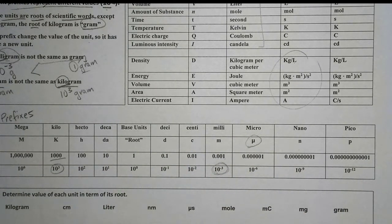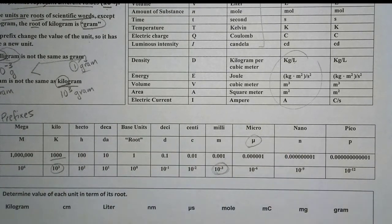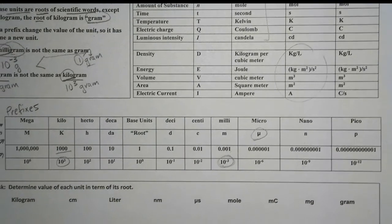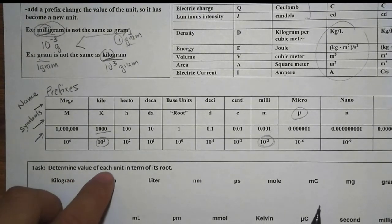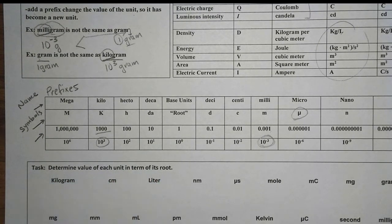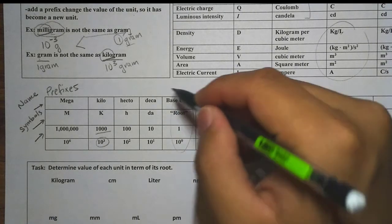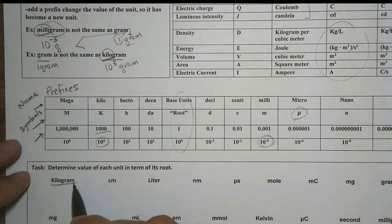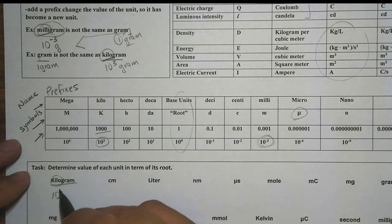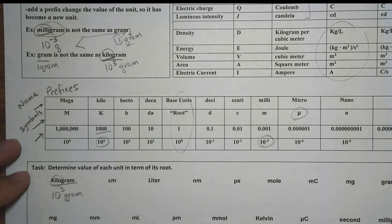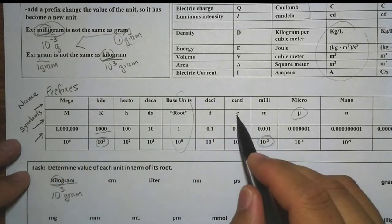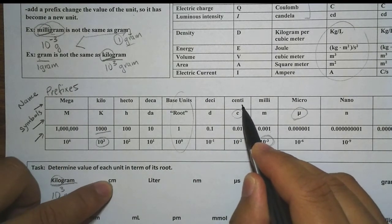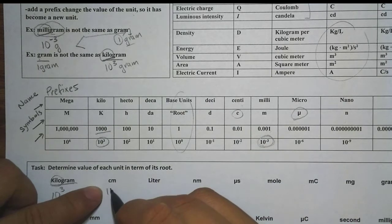I will show you a shortcut to memorize all of these prefixes and their values in the next video. For now, let's learn how to apply them. The task is to determine the values of each unit in terms of its root. We already did kilogram — kilo is 10 to the third, so we have 10 to the third grams. Then we have cm: C stands for centi, and centi is 10 to the negative two. M stands for meter. So cm = 10 to the negative two meters.